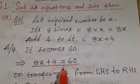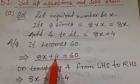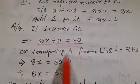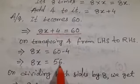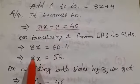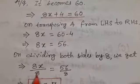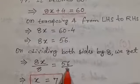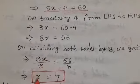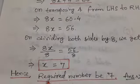Now we need to solve it. On transposing 4 from LHS to RHS it becomes minus 4, so we write 8x = 60 − 4 = 56. Now we divide both sides by 8: 8x/8 = 56/8. The 8s cancel, giving x = 7. Hence the required number is 7.